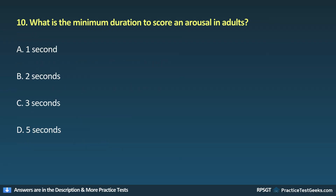Question 10: What is the minimum duration to score an arousal in adults? A. 1 second, B. 2 seconds, C. 3 seconds, D. 5 seconds.